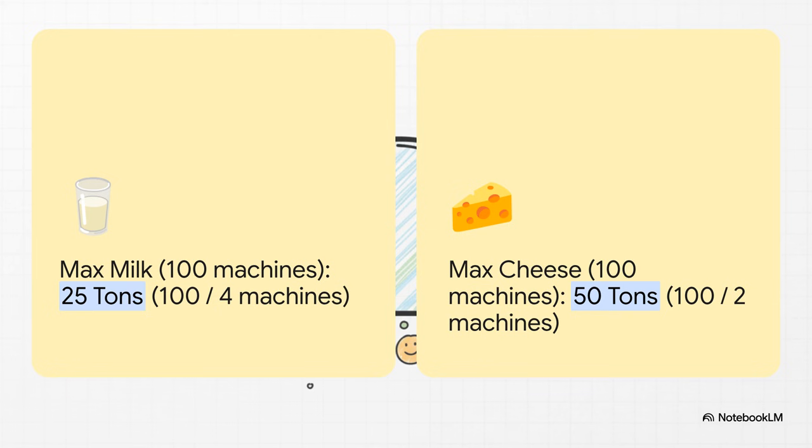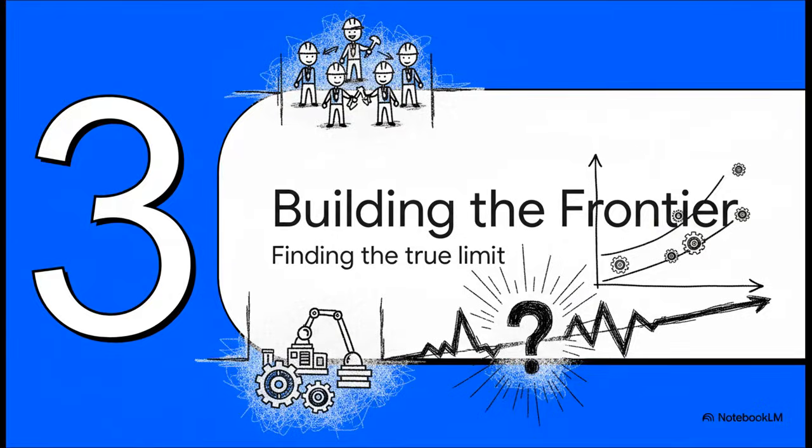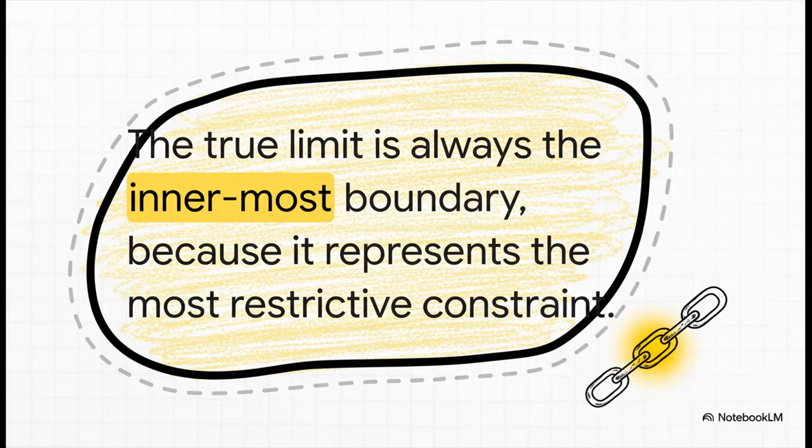Machines are a tighter bottleneck than labor for both of our products. So now we've got two different boundaries, one from our workers and one from our machines. And this brings us to the most important question of all. What is the actual real-world boundary for our economy?